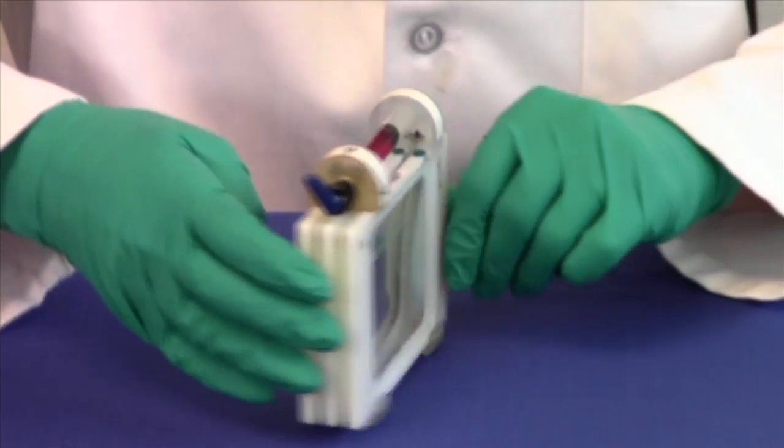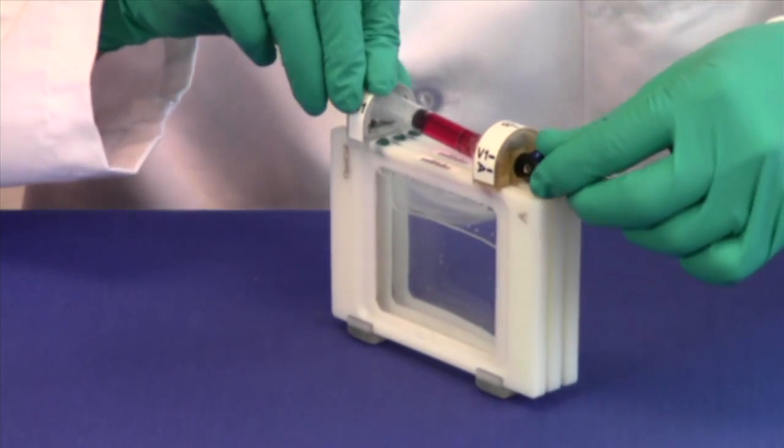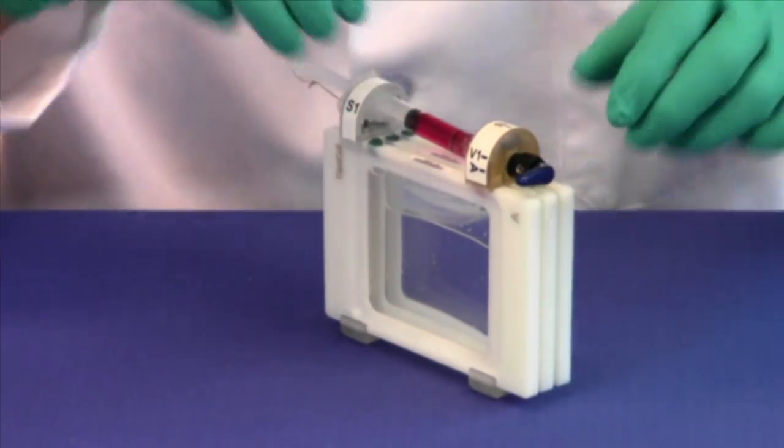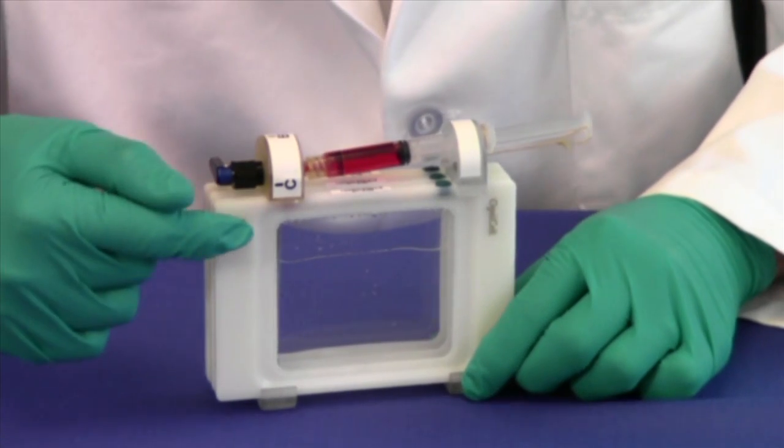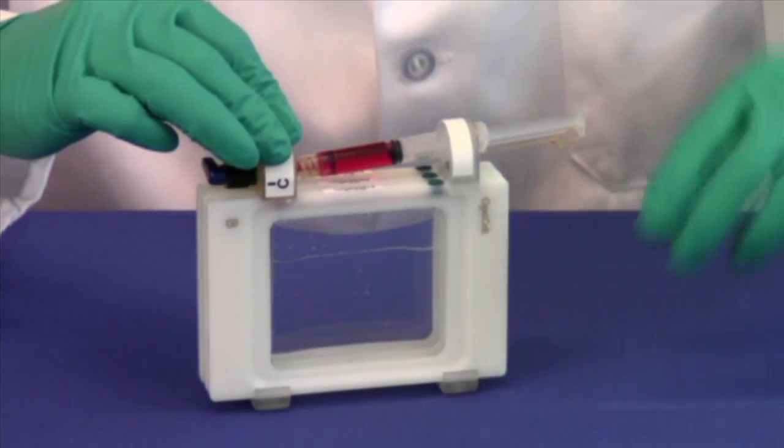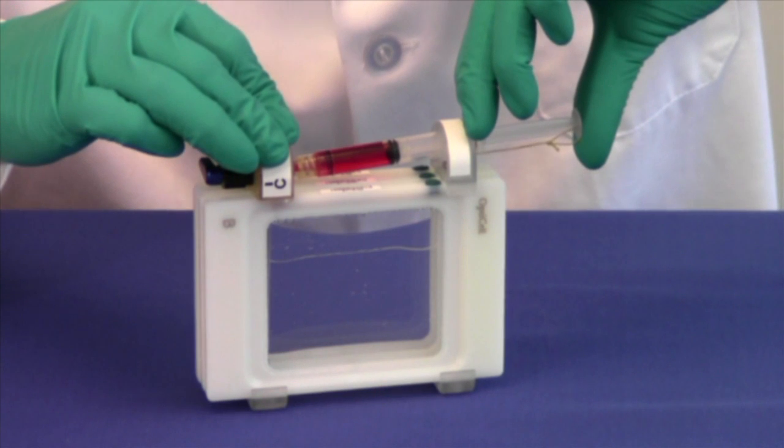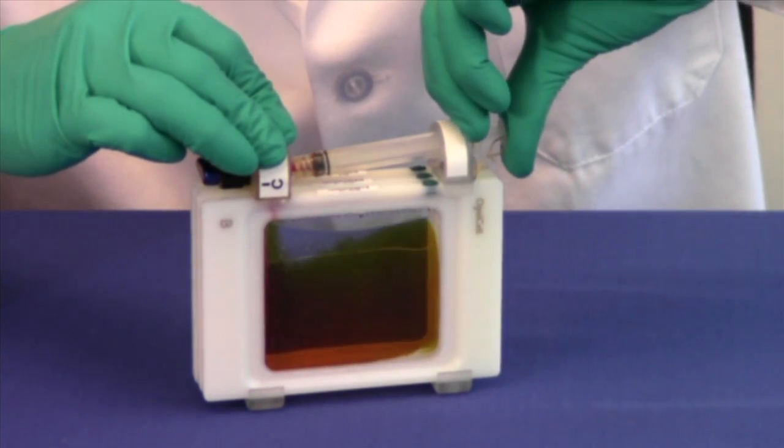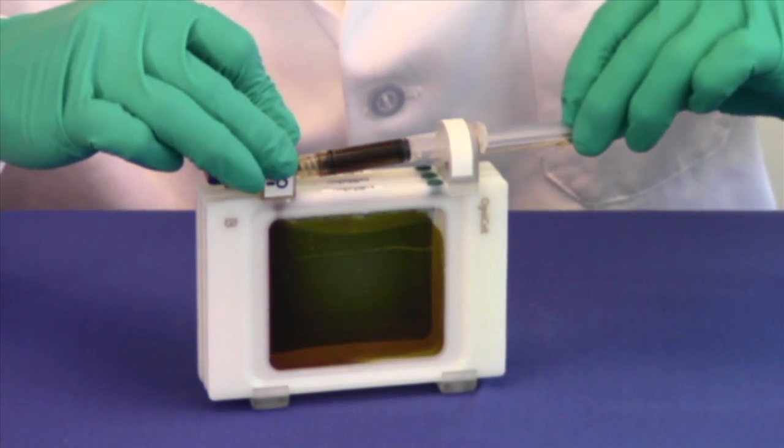The first step was to place the valve handle on the A position, and what that does is connect the syringe to the first OptiCell. Next step was to inject the bacteria into its food and then we use the syringe itself to mix it.